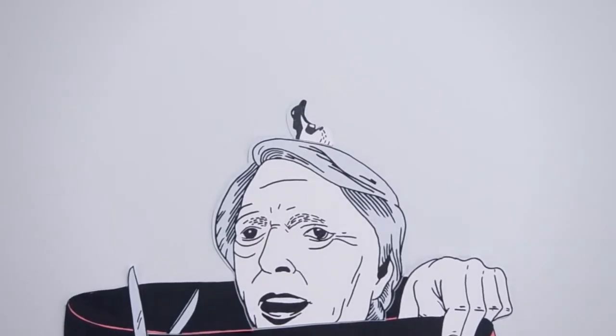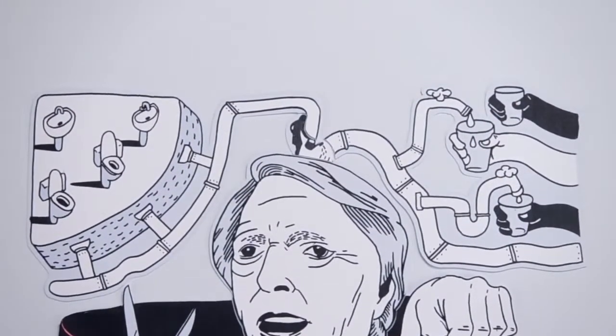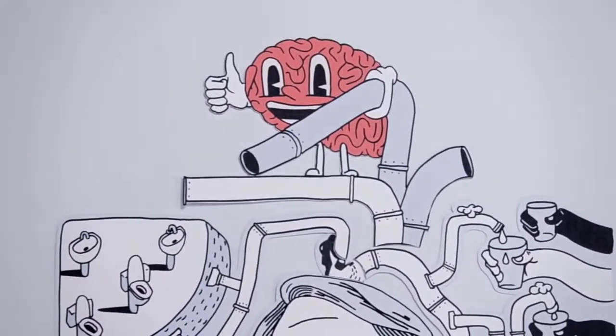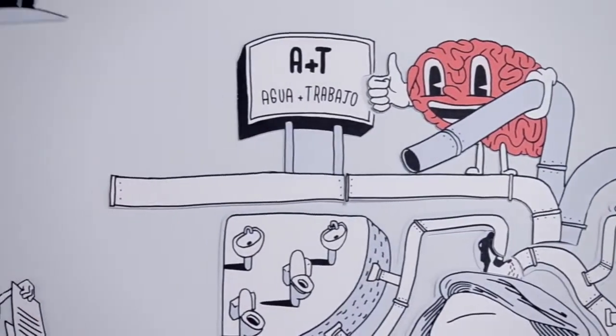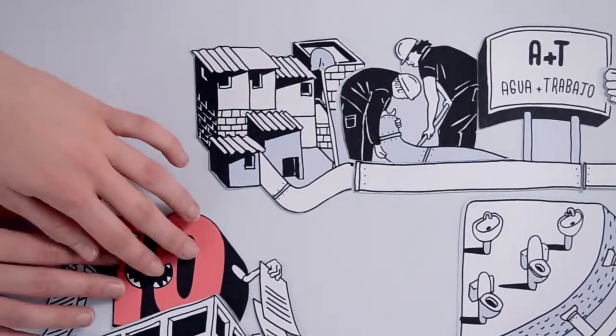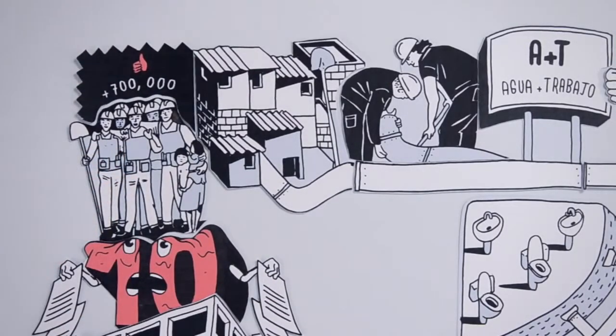Expansion of access became the main objective, and the government pumped millions into infrastructure to universalize water access. Some innovative new strategies were rolled out, such as the creation of worker cooperatives that involve residents in expanding the water network in low-income neighborhoods. This initiative alone connected more than 700,000 new water users.